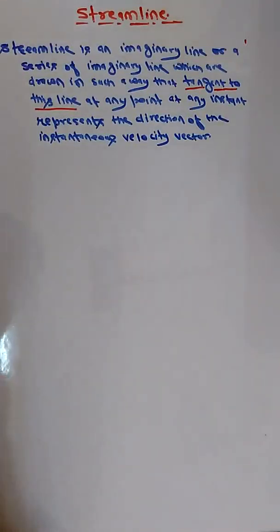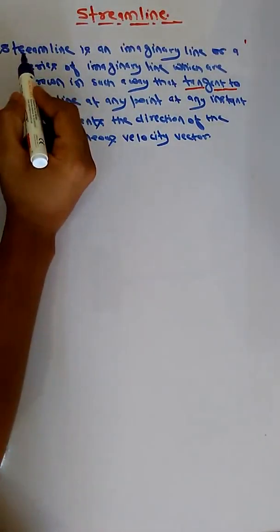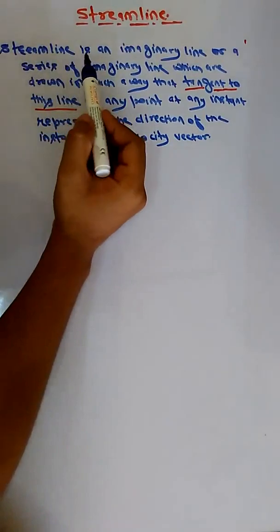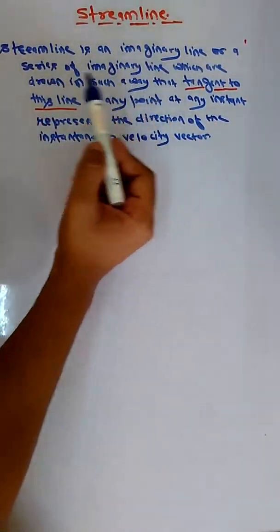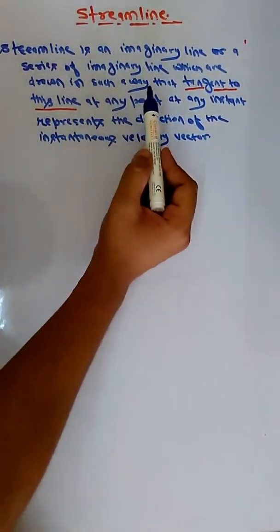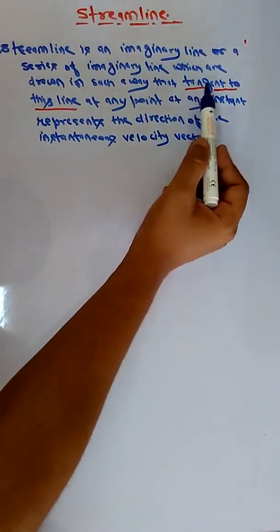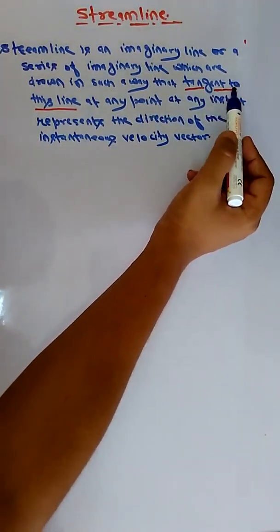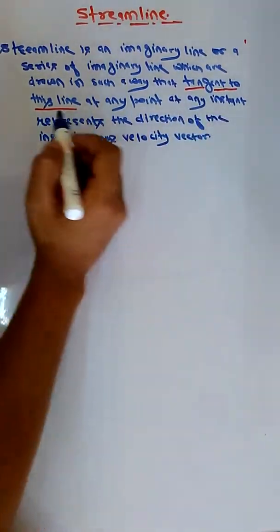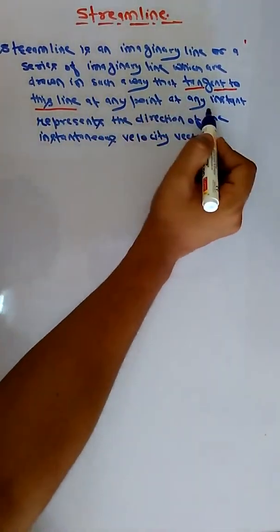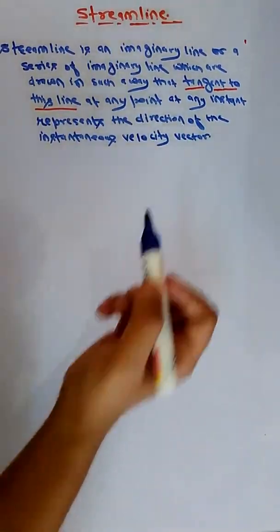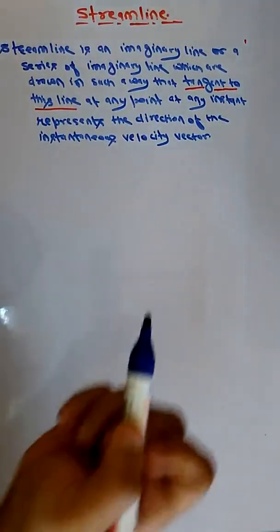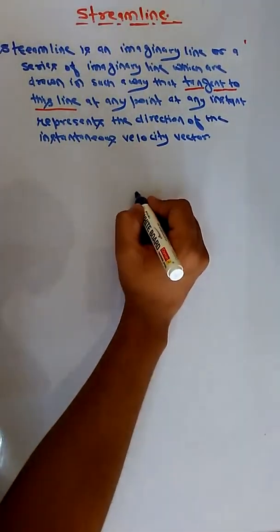So what is actually a streamline? A streamline is an imaginary line or a series of imaginary lines which are drawn in such a way that if you draw a tangent to this line at any point at any instant, it represents the direction of the instantaneous velocity vector.